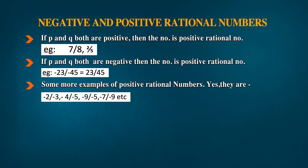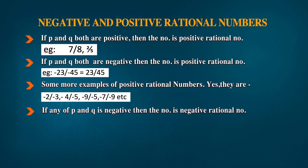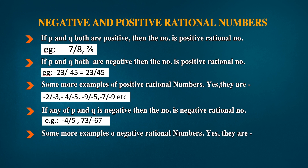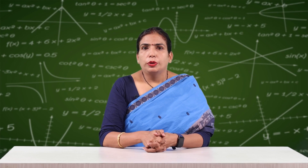If any one of p or q is negative, the number is a negative rational number. For example, -4/5 and -73/67 are negative rational numbers. More examples: -2/3, 4/-5, -9/5, -7/9, etc.